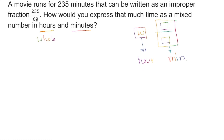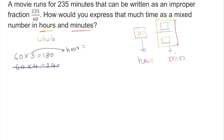60 times 3 gives 180 minutes. All together I have 235, and 60 times 4 is 240 — that won't work because we don't have 240 minutes, we have less than that. So the maximum we can go is 180, meaning 3 is our hours. 180 minutes equals 3 hours.